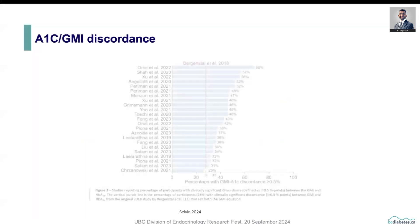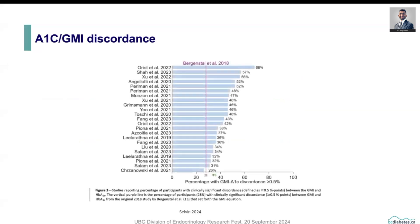The A1C-GMI discordance is not something new. It has been reported in different studies across various settings, and the rate of clinically significant discordance between A1C and GMI, where the difference is greater than or equal to 0.5, is ranging anywhere from 26 up to 68 percent. This purple line represents the Bergenstal analysis.